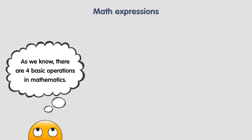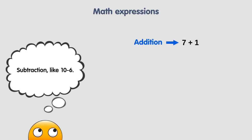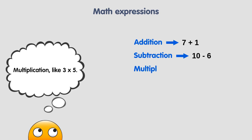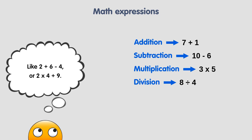As we know, there are four basic operations in mathematics: addition, like seven plus one; subtraction, like ten minus six; multiplication, like three times five; and division, like eight divided by four. There are also combined operations, like two plus six minus four, or two times four plus nine.